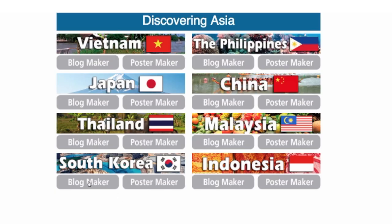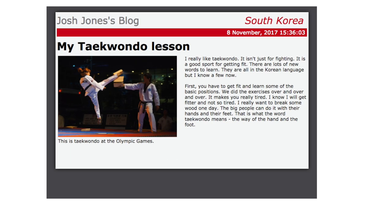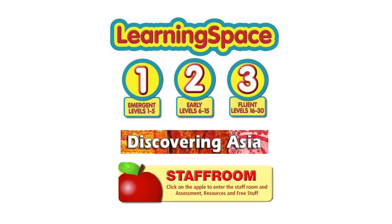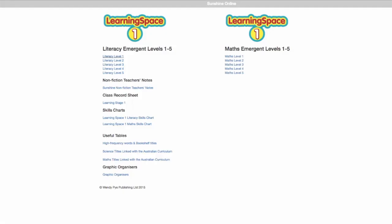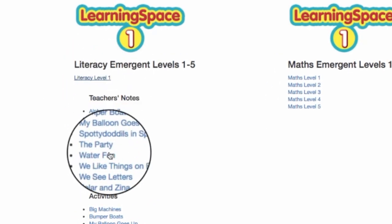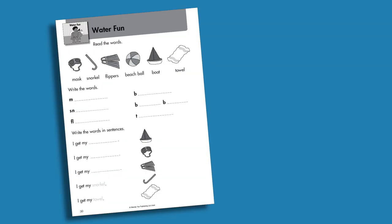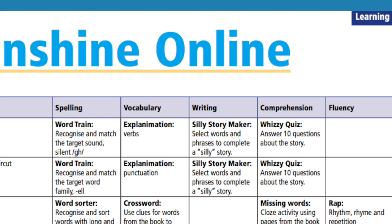The activities at the end of the e-book are writing templates that allow students to create their own blog and poster about the country. Also on the home page is the staff room — this is where the teaching support materials for Sunshine Online are found. They include teaching notes, activity sheets and skills overview charts.